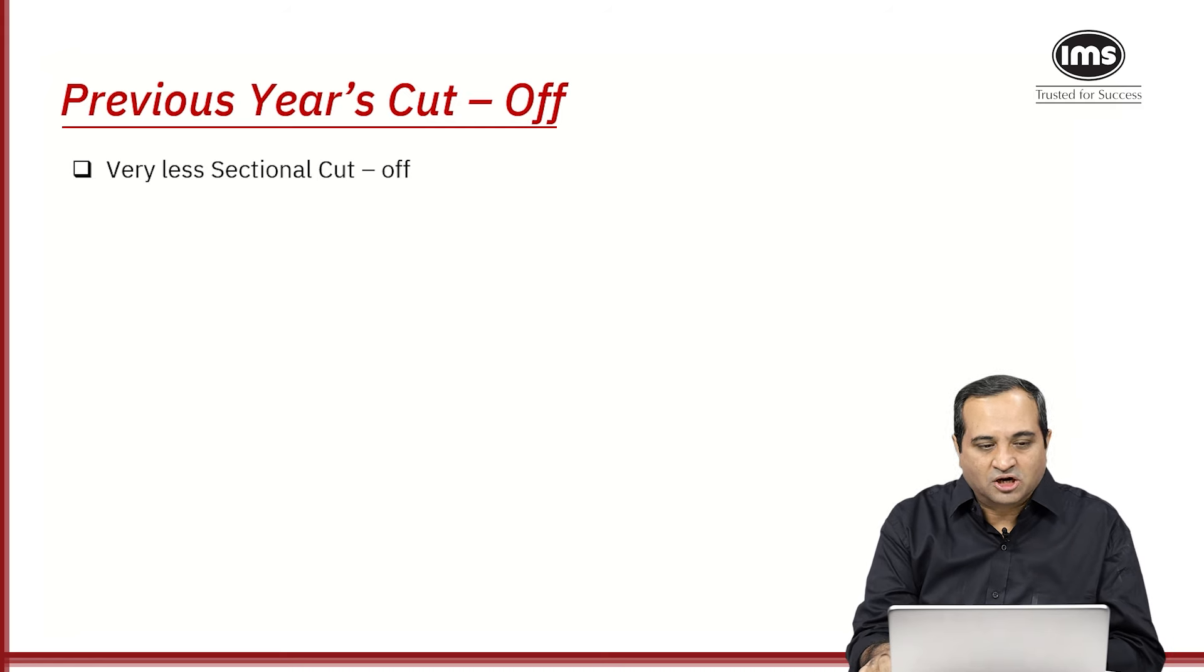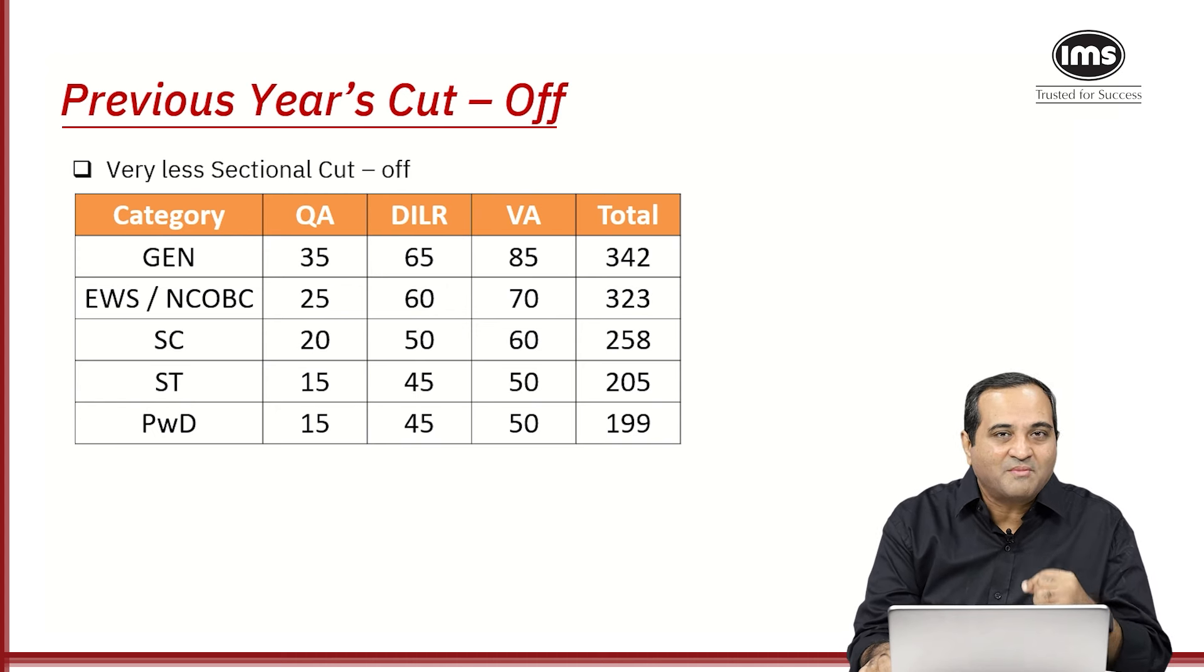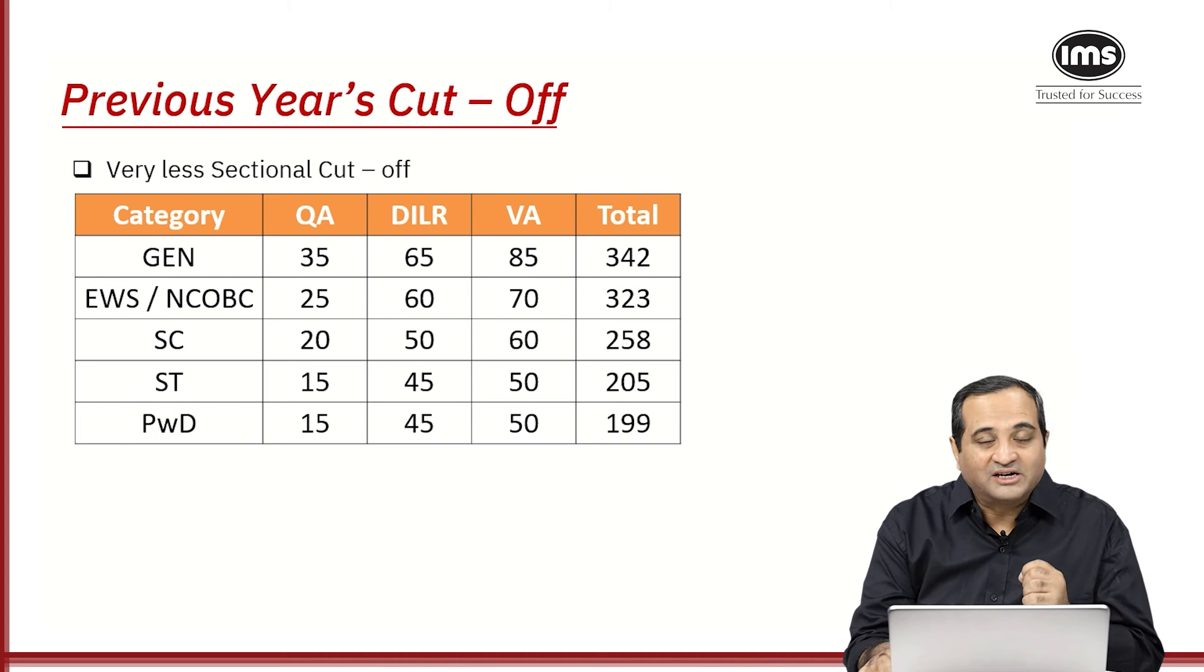So let's look at the sectional cutoffs. Now if you look at the sectional cutoffs for a general category student, you need to get 35 marks in QUANT, 65 marks in DILR and 85 marks in verbal. But overall if you check, I need 342 marks. Now the test is of 100 questions and every question gives me 4 marks. That means the total marks that I can get is 400. So out of 400, the cutoff was 342. Again, if you look at the cutoffs, 35, 65, 85, do you realize it is very very less?